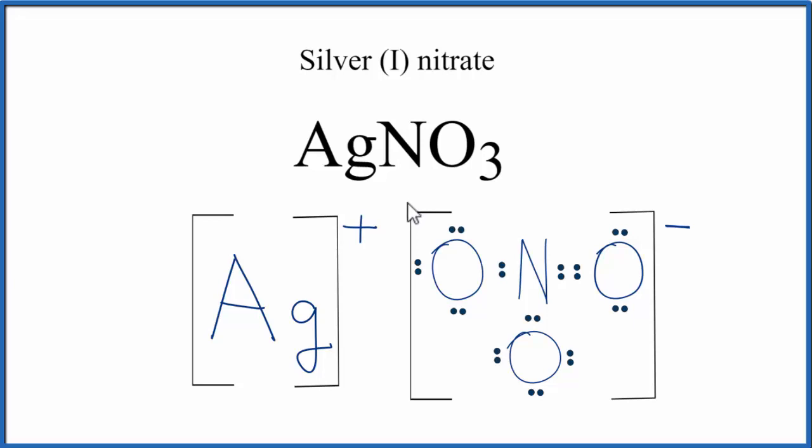Do note that AgNO3 is a crystal, and it's made up of a bunch of these regularly repeating formula units. What we've drawn is just one formula unit that fits together to make that larger crystal.